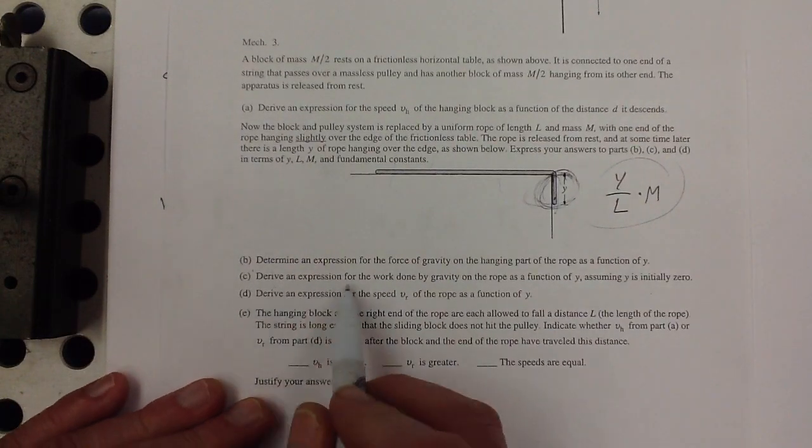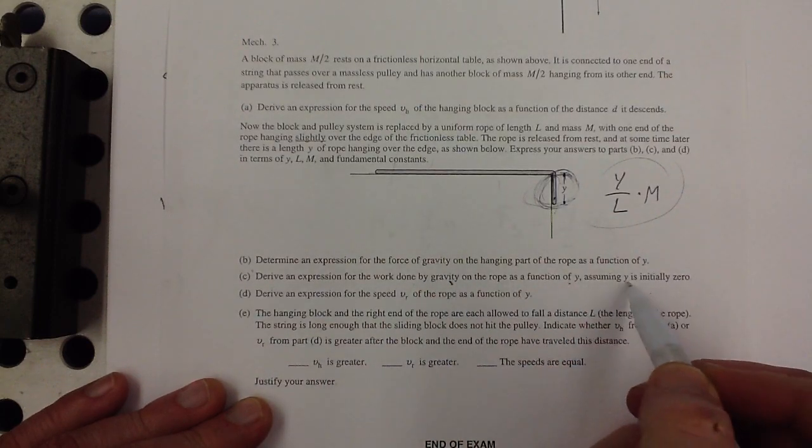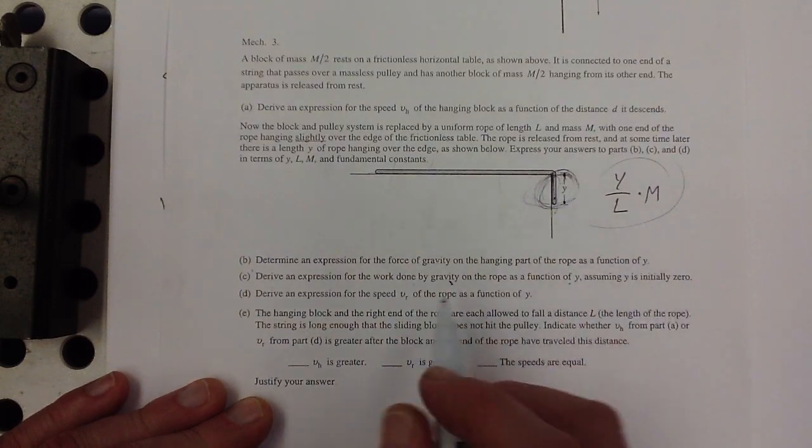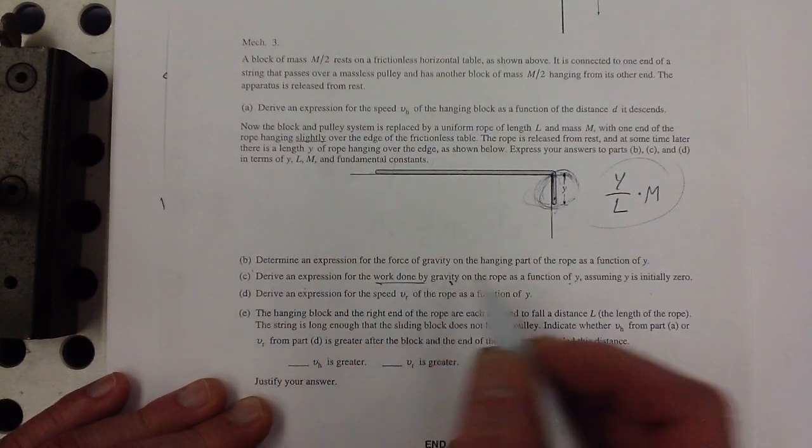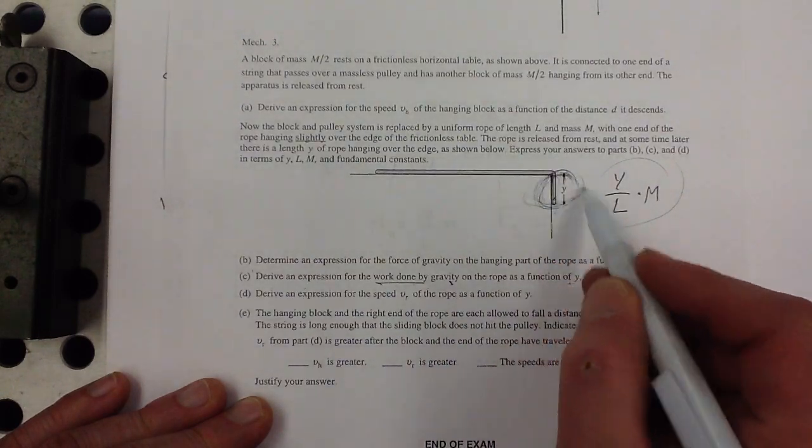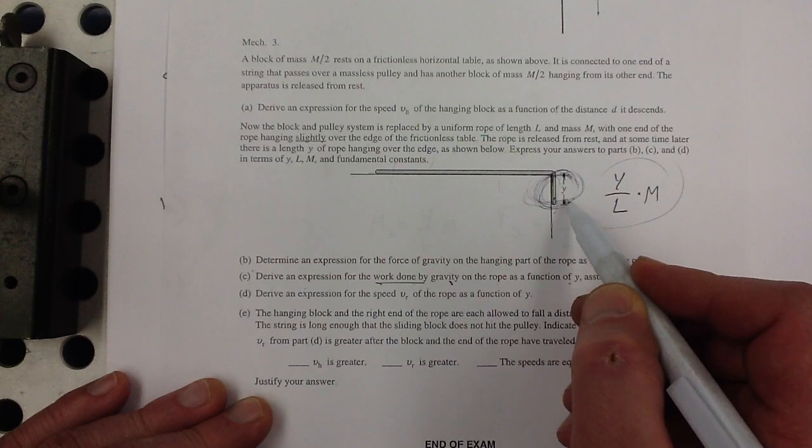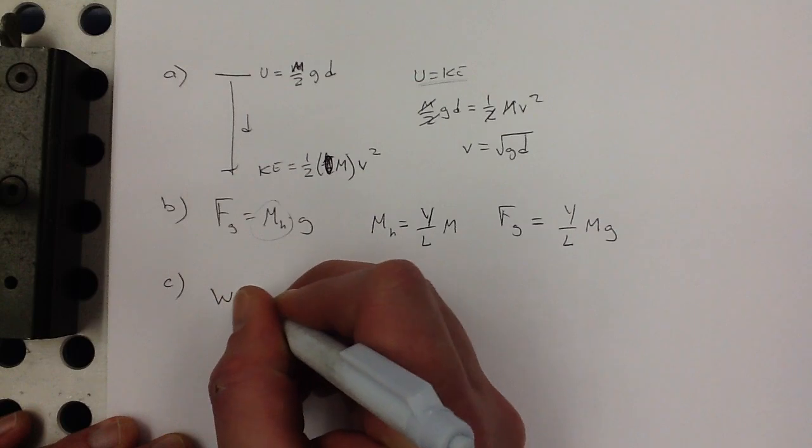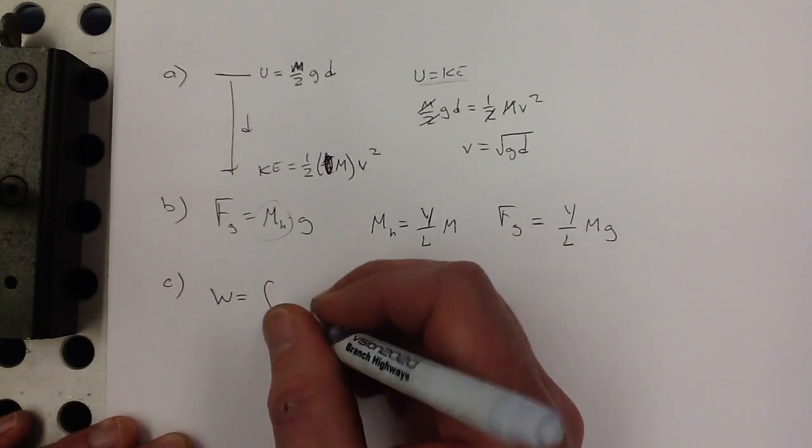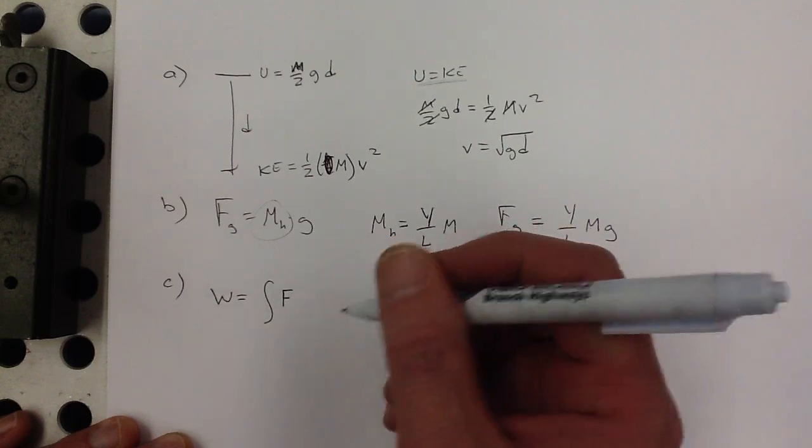Next, I want us to derive an expression for the work done by gravity on the rope as a function of y, assuming that y is initially zero. Now, the work done, this is a variable force. Since the amount of rope hanging over the edge is changing, that means the gravitational force is changing. And that means that we must use work is equal to the integral from wherever to wherever of force as a function of distance.